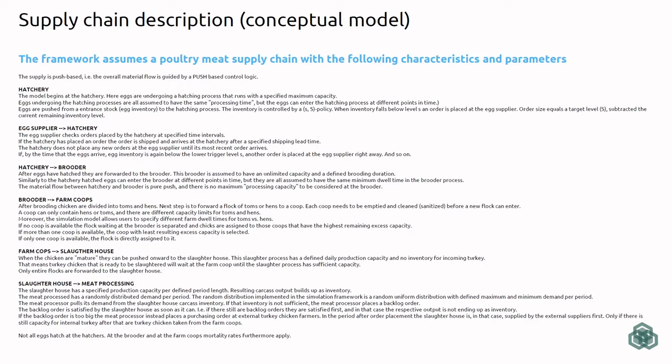For example, one thing you can see, and which I should point out here, is there is a defined S inventory policy—a small S, big S inventory policy—with regards to the eggs at the hatchery. So based on this policy, the hatchery will purchase eggs from the egg supplier, and this process is associated with a shipping lead time. So there is a feedback delay in this supply chain between the egg supplier and the hatchery.